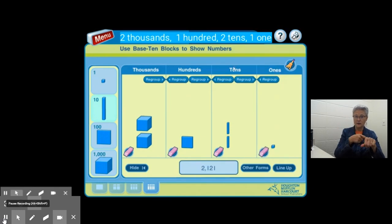Remember that each time we move to the left, the place value is getting 10 times greater, so thousands are 10 times greater than hundreds. Hundreds are 10 times greater than tens. Tens are 10 times greater than ones.